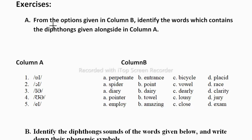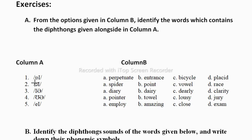Let's start solving the diphthongs exercises from your textbook. The first exercise says: from the options given in column B, identify the words which contain the diphthongs given alongside in column A. So here you have to first identify the sound of the diphthong, and then based on this sound you have to choose the word from the four options.